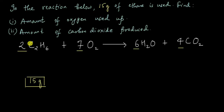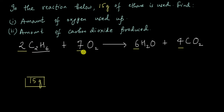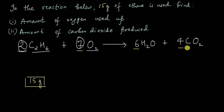These numbers are telling me that if we have two molecules of ethane and seven molecules of oxygen, then they can react to produce six molecules of water and four molecules of carbon dioxide. That means the ratio of the number of molecules of ethane and oxygen will always be 2 is to 7. And we know that the number of moles is directly proportional to the number of molecules.